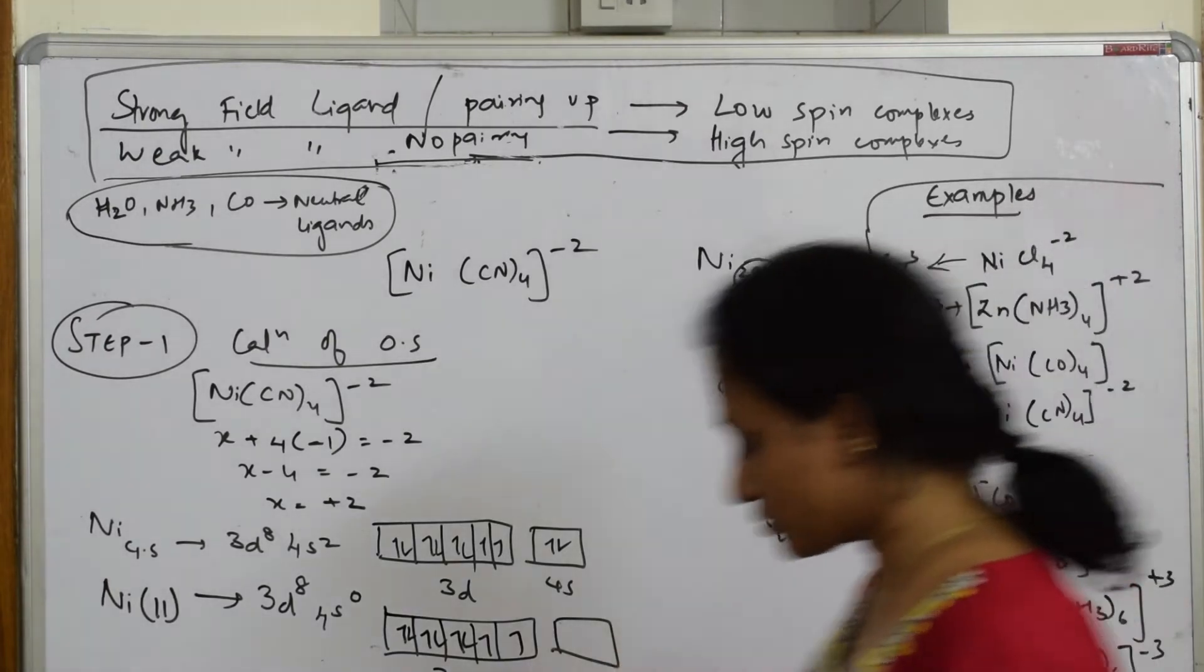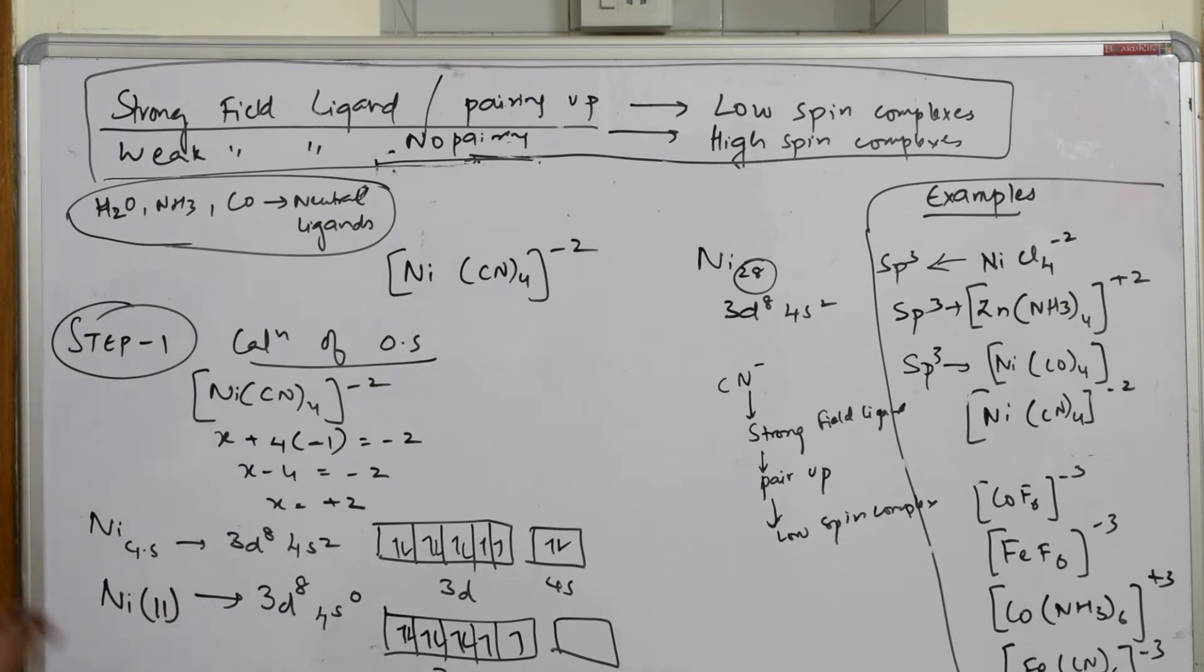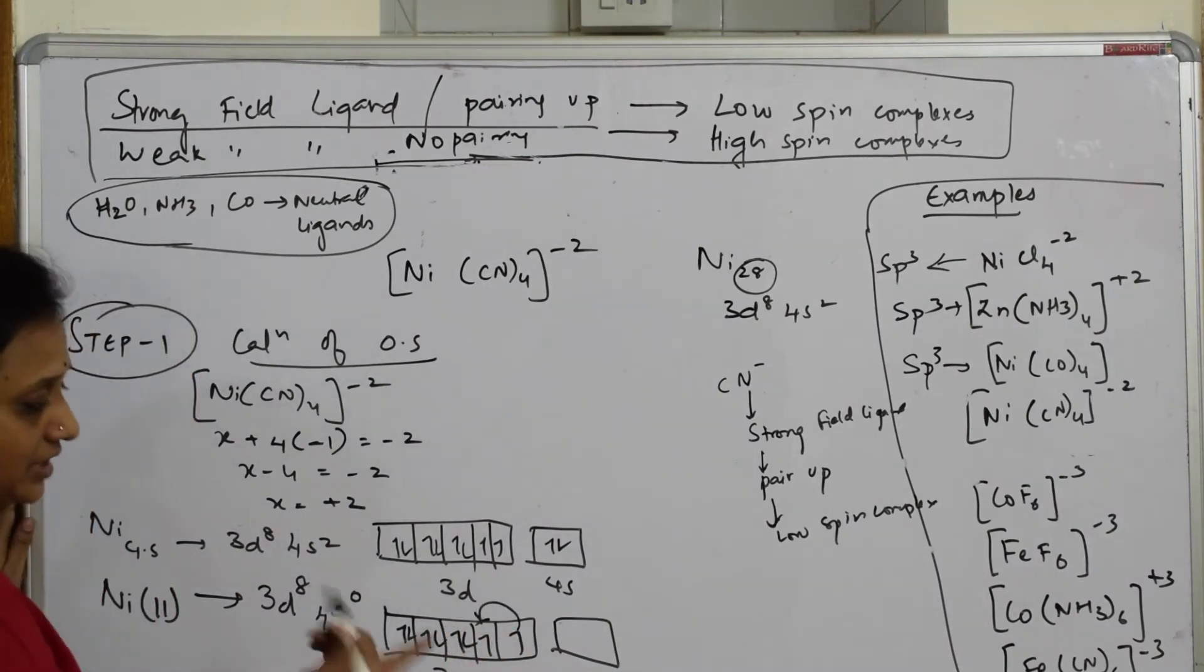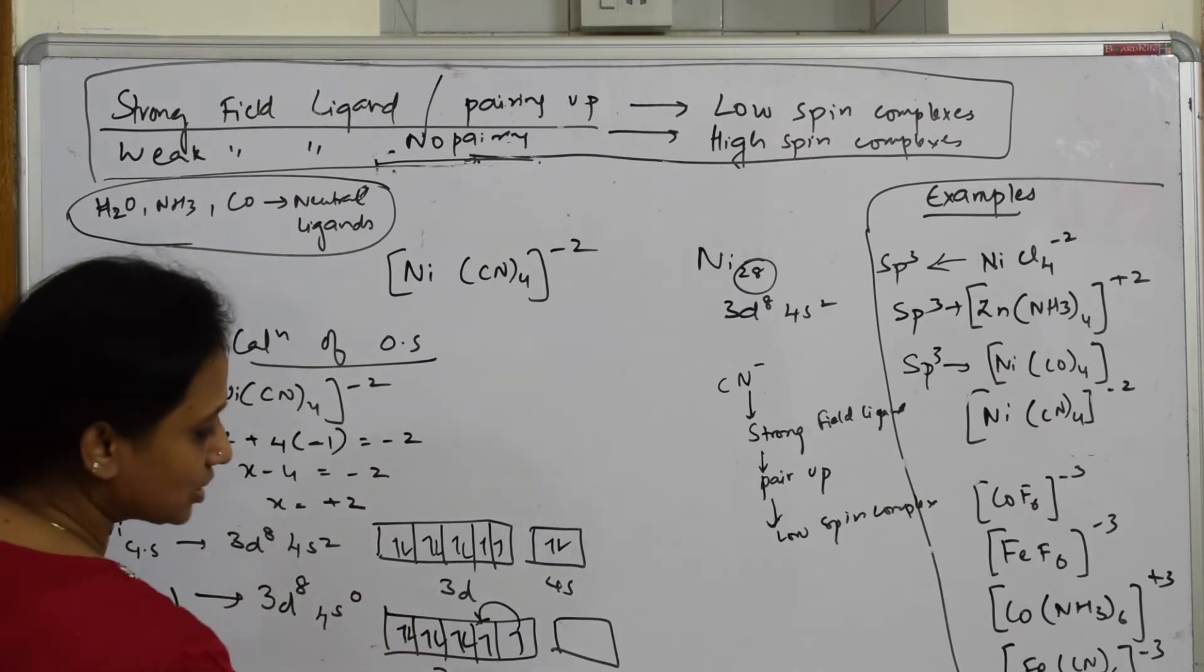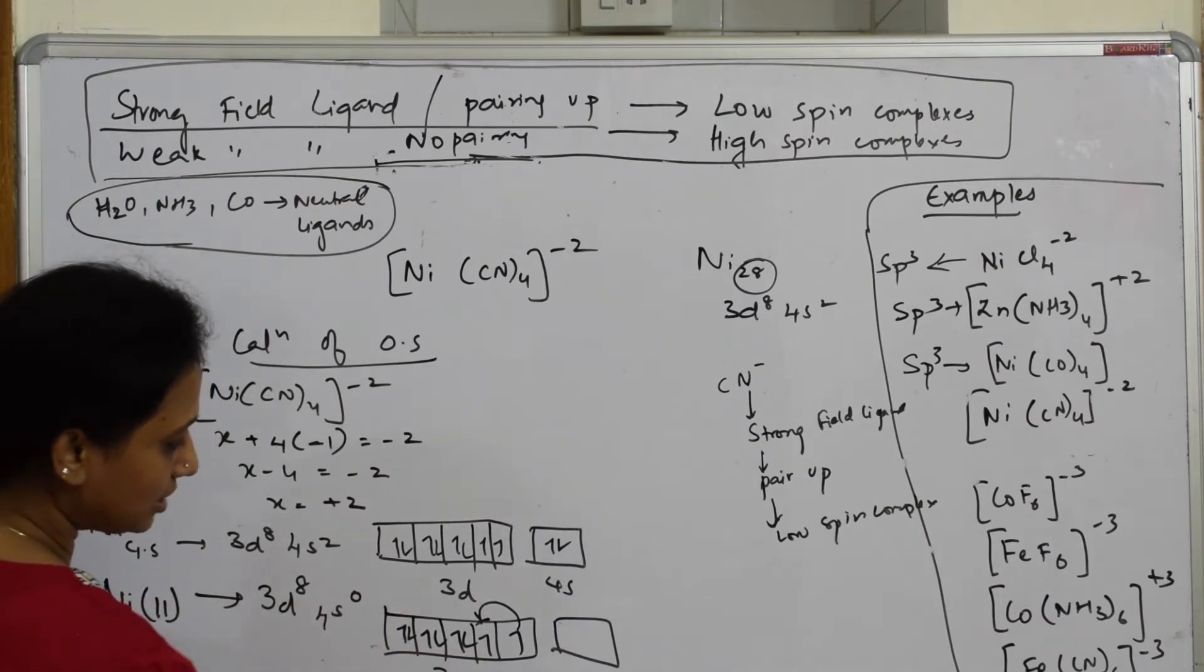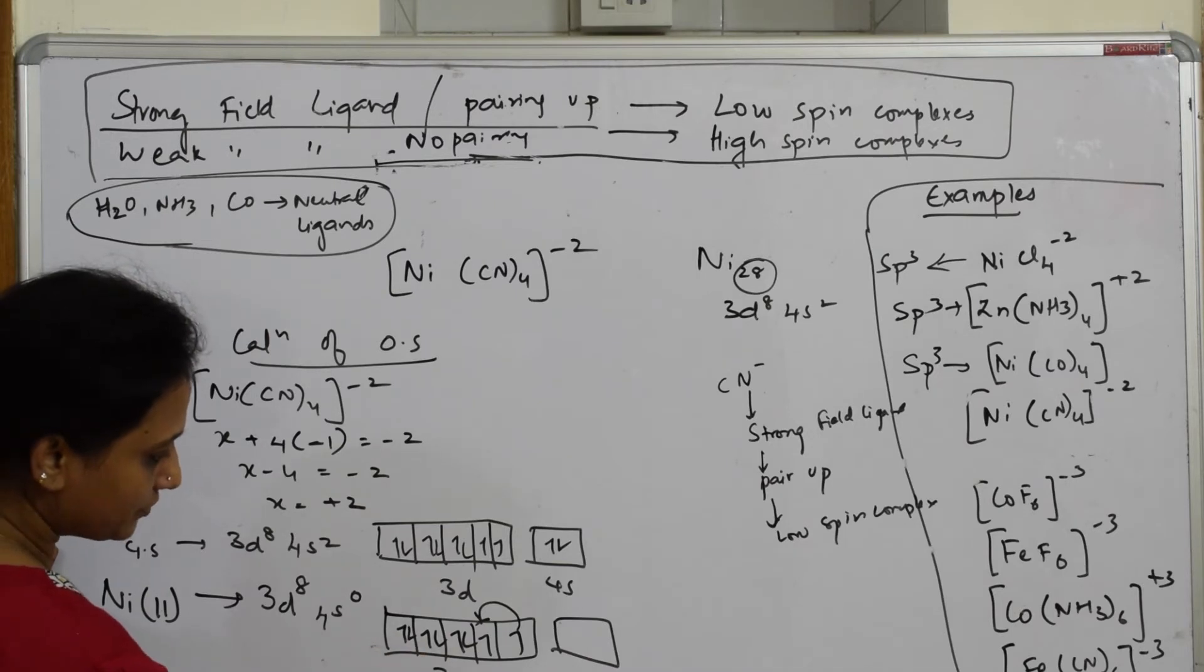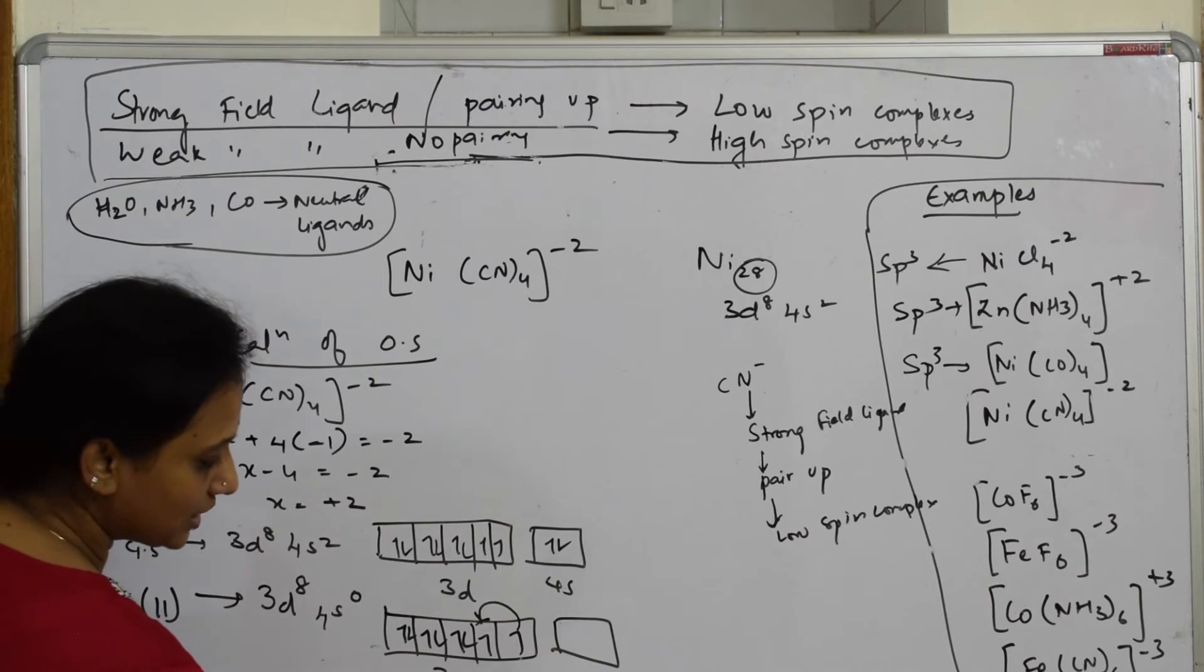So what is going to happen now? The electron here from here is going to pair up with this. When it is pairing up, how does this d orbital look? This d orbital looks like this: these two are here, this is half, this is half, this is half. No, full. This is filled, this is also filled, this is also filled.